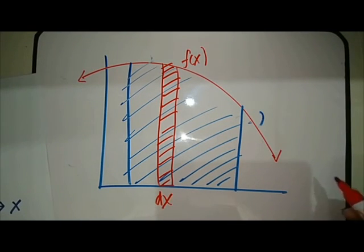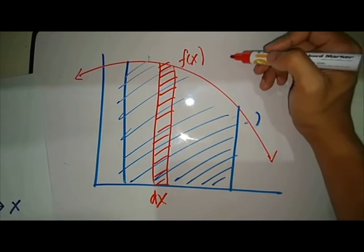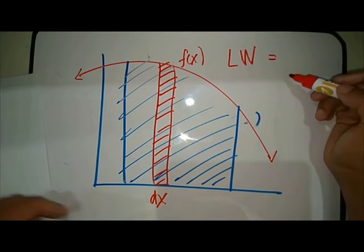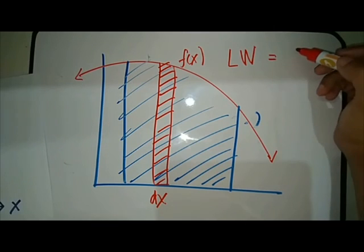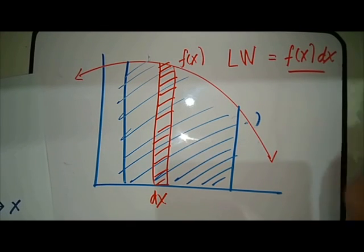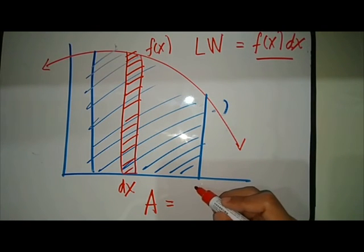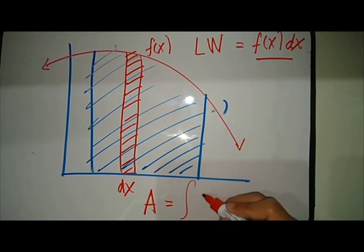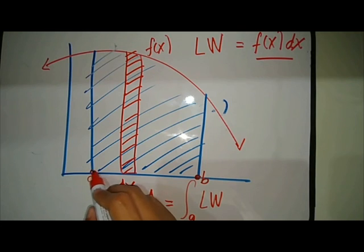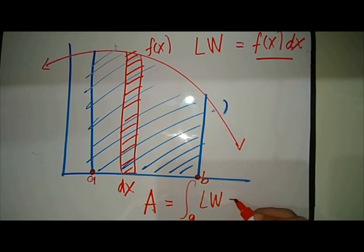And the area of a rectangle is given by length times width. So we have f(x) times dx. Now, this is just the area of that single strip. To find the area of the hole, we need to add all that small strips. That's when we need integral. We conclude that the shaded area is just equal to the integral of f(x)dx from a to b.